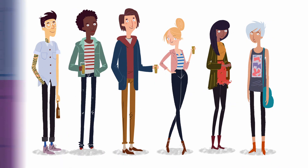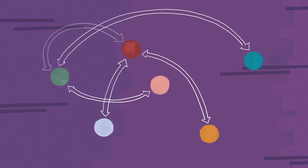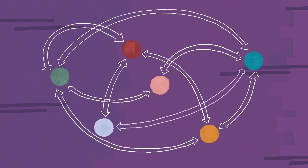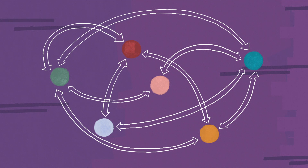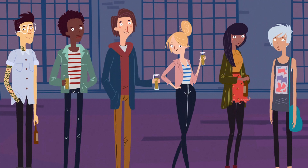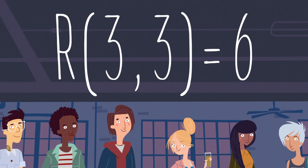We can demonstrate that by graphing out all the possibilities. Each point represents a person, and a line indicates that the pair know each other. Every pair only has two possibilities: they either know each other or they don't. There are a lot of possibilities, but every single one has the property that we're looking for. Six is the lowest number of guests where that's guaranteed to be the case, which we can express like this.